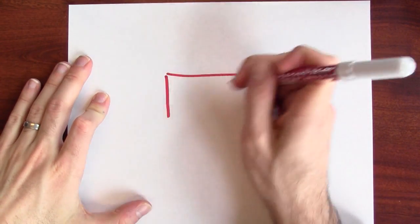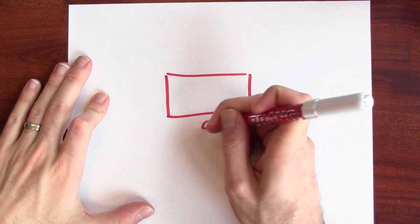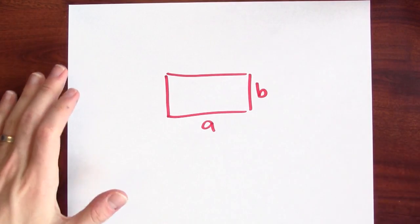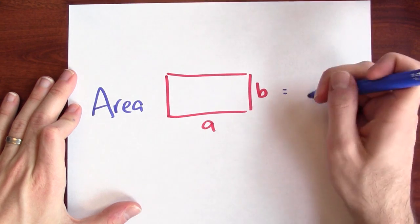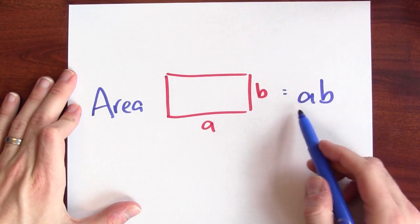We know what the area of a rectangle is. Well, if you've got a rectangle of width a and height b, what should the area of this rectangle be? Well, the area of this rectangle is a times b.